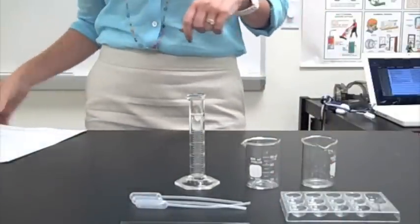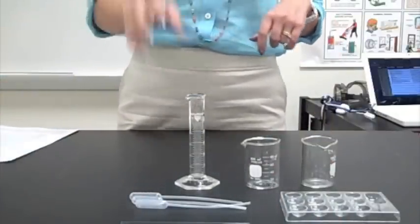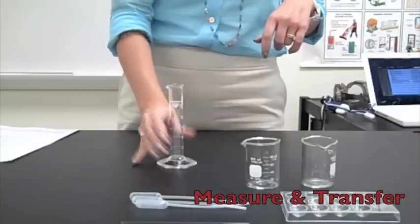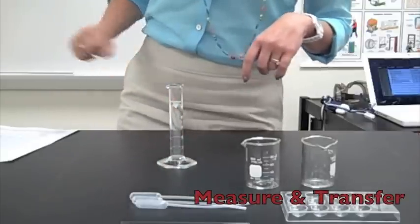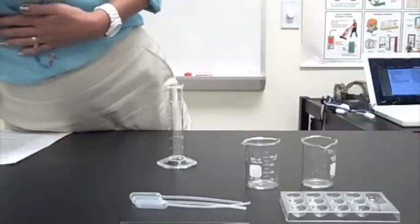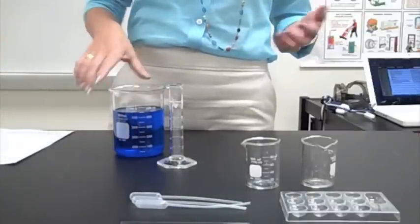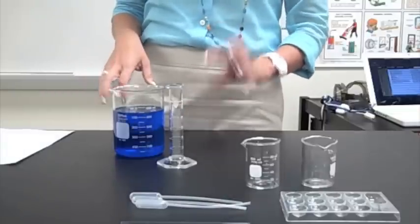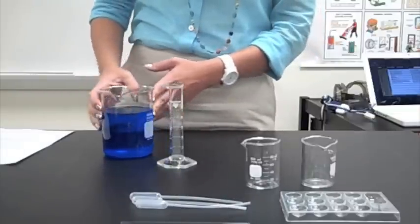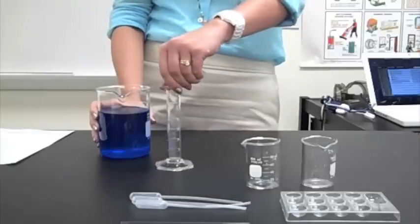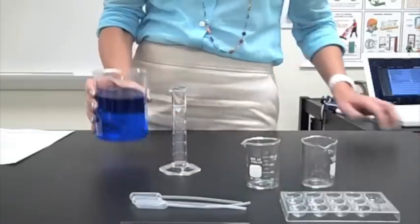This is the equipment that you'll need for the liquids part of it. First step says, using the 25mm graduated cylinder, measure 14.5mm of the blue solution. On your lab table, it will already be here when you get set up, will be a small beaker of blue solution. And it says we need to get 14.5 milliliters.